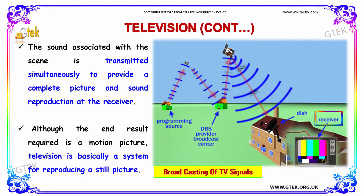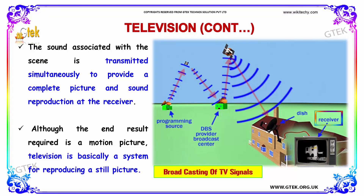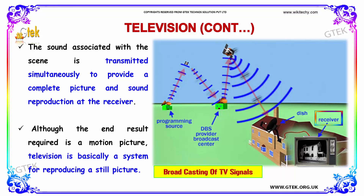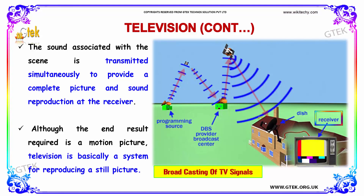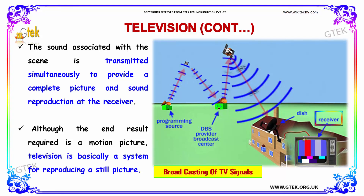Although the end result is a motion picture, television is basically a system for reproducing a still picture. I am trying to show the broadcasting of TV signals here. Through satellites, you are able to get the signal and see the destination with all the signals received at the receiving end, and you are able to see it on the television.